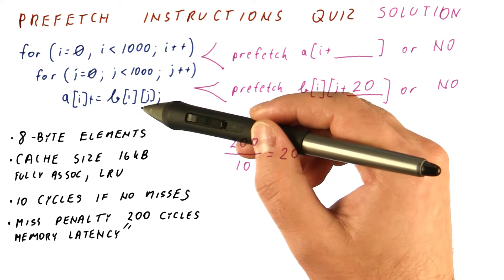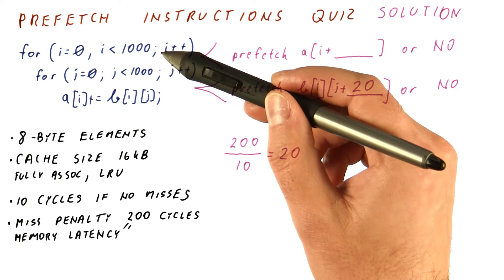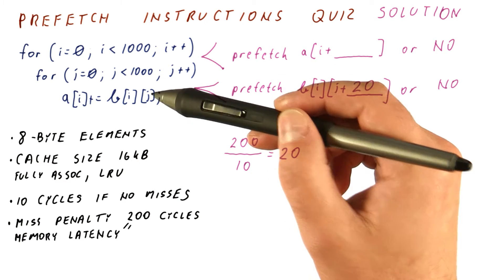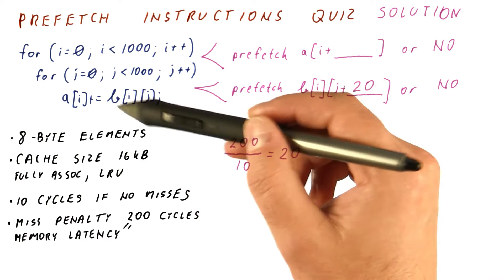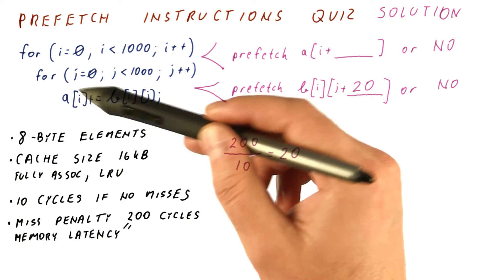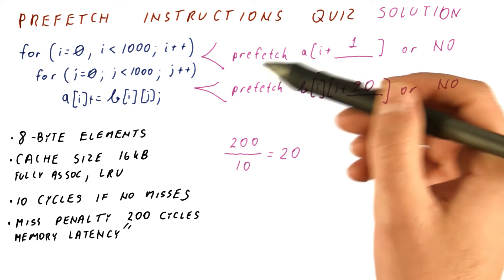The question is, how much cache data does each iteration of the outer loop bring in? The answer is it brings 1,000 8-byte elements and an element of A.